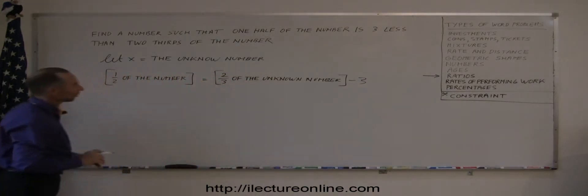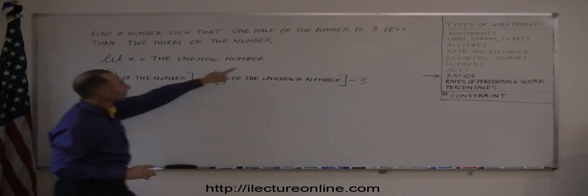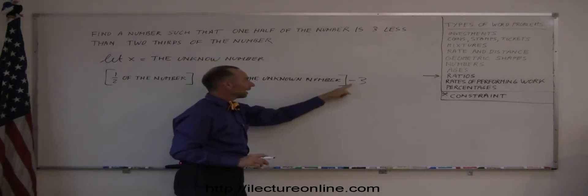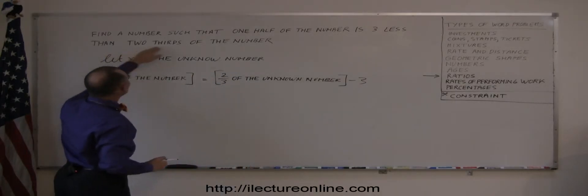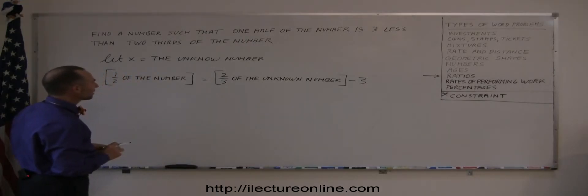So now, if you bear with me, it probably makes sense. So it says one-half of the number, one-half the number is three less, three less than two-thirds of the number, two-thirds of the unknown number. There you go. There's the equation that we need.